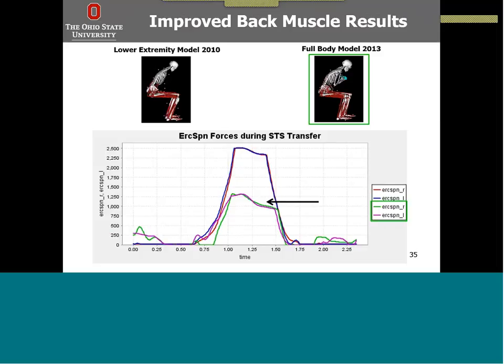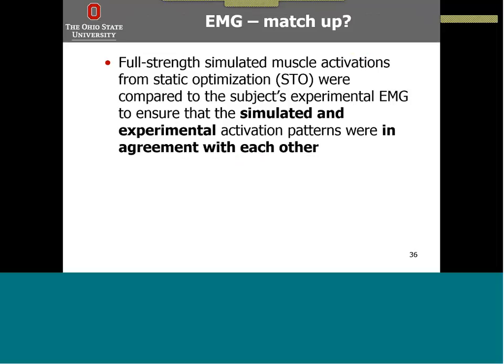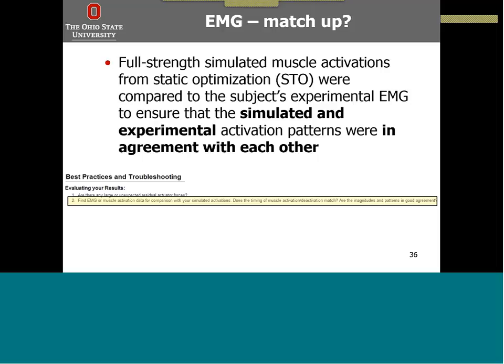Elena is feeling super confident here, but like any good advisor I have to check her enthusiasm. One of the things that is important to do in a simulation is, if possible, compare the muscle activations you get from simulation to experimental EMG to see if they are in good agreement. Ideally you would do this for the same person; if not, you can use data from the literature. This is even listed as one of the best practices in troubleshooting — does the timing of activation and deactivation match, and are the magnitudes and patterns in fairly good agreement with one another?